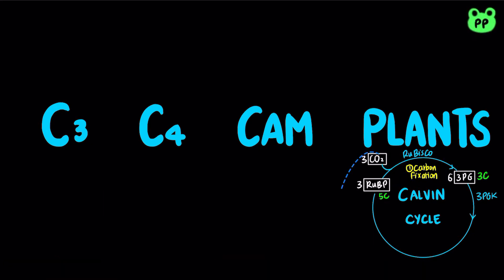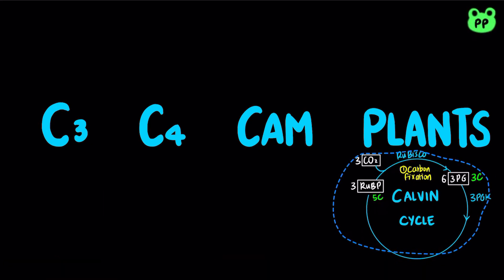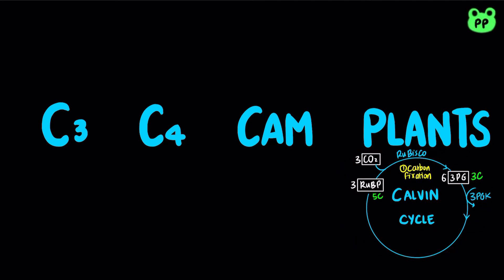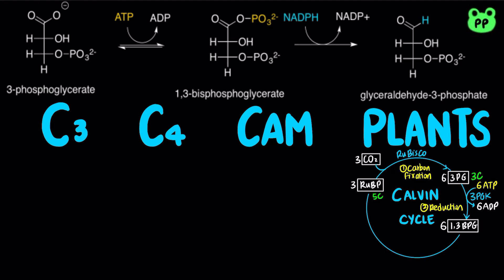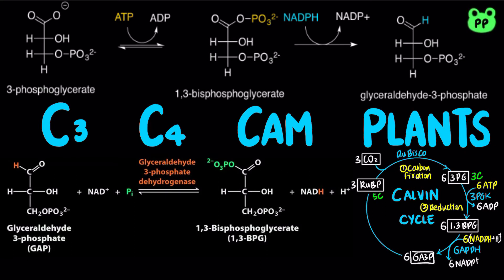The second stage involves the reduction of 3-phosphoglycerate to glyceraldehyde 3-phosphate, which shares several enzymes with gluconeogenesis. First, 3-phosphoglycerate kinase transfers phosphate group from ATP to 3-phosphoglycerate, producing 1,3-bisphosphoglycerate, abbreviated as 1,3-BPG, which is subsequently reduced to glyceraldehyde 3-phosphate, abbreviated as GA3P, by glyceraldehyde 3-phosphate dehydrogenase, or GAPDH, coupled to the oxidation of NADPH to NADP+, which is distinct from NADH used in gluconeogenesis.